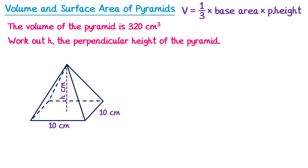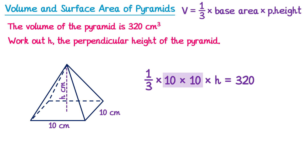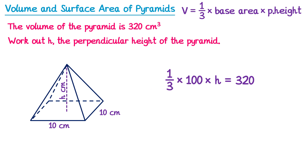Let's imagine we were going to calculate the volume. We would start by saying one-third multiplied by the base area, so 10 times 10, and then we would normally multiply by the perpendicular height but we don't have that — it's called h — so we'll just write multiplied by h. But we do know the answer to this calculation: we're told the volume is 320, so this must equal 320. Now we just have an equation to solve. Multiplying 10 and 10 gives 100, so we have one-third multiplied by 100 multiplied by h, which is 100h over 3.